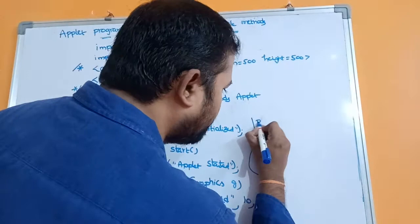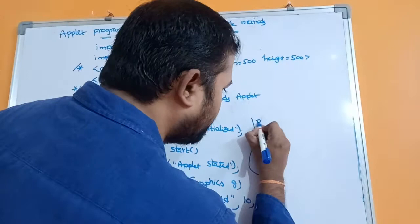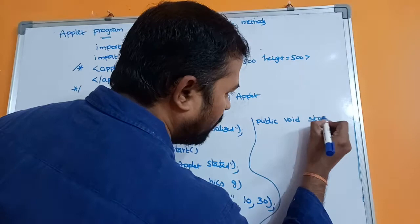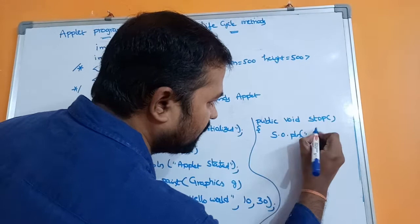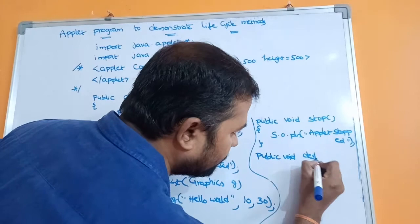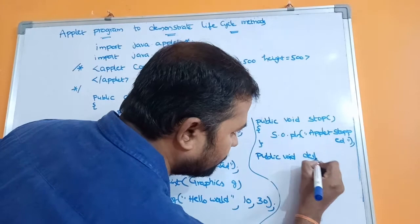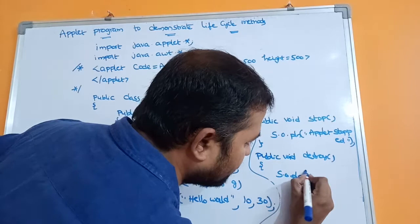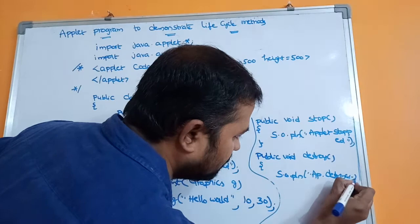Next we have two more methods. The first is the stop method: public void stop(). Here we use System.out.println('Applet stop'). Then we close the stop method. The last method is the destroy method: public void destroy(). Inside it we use System.out.println('Applet destroyed'). Then we close the destroy method and close the class.